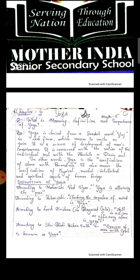Another words में योगा का meaning देखो तो योगा क्या होता है - unification of आत्मा with परमात्मा. That means कि जो आपकी आत्मा unite होगी परमात्मा के साथ। इसी के साथ योगा का अर्थ है the unification of physical, mental, intellectual and spiritual aspects of human beings. That means कि जब human being के ये सारे aspects unite होते हैं, उसको आप yoga define करते हो. तो ये था आपका meaning of yoga, जिसमें हमने various definitions को discuss किया है.